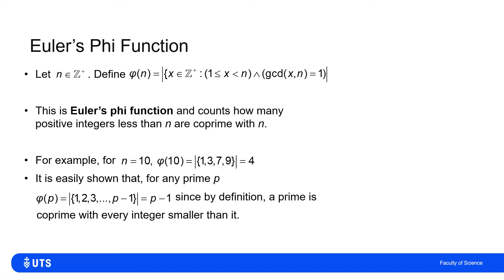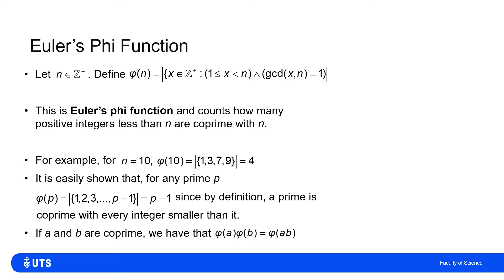We can show that for any prime number, by definition, everything is co-prime with a prime number. So if I pick any prime p, then all of the elements 1, 2, 3, 4, 5, 6, up to and including p minus 1, are co-prime with it. So phi of p, where p is prime, is p minus 1. We also have that if a and b are co-prime, then phi of a times phi of b is the same as phi of a times b.